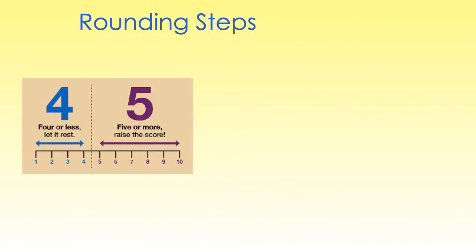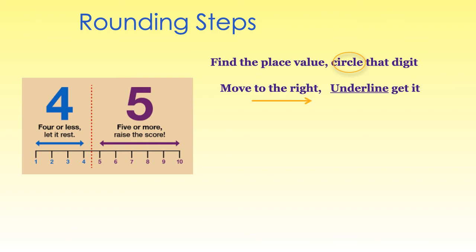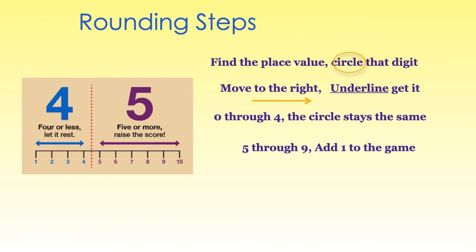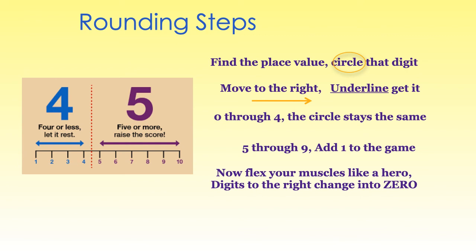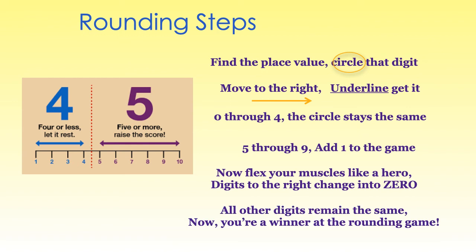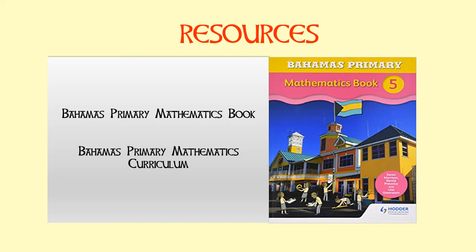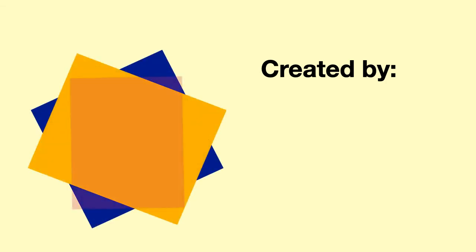Remember the steps for rounding — they're the same when rounding whole numbers and decimals. Find the place value, circle that digit. Move to the right and underline it. Zero through four, the circle stays the same. Five through nine, add one to the game. Now flex your muscles like a hero — digits to the right change into zero. All the other digits remain the same. Now you're a winner at this rounding game. This video was created by Miss Antonia Bain.